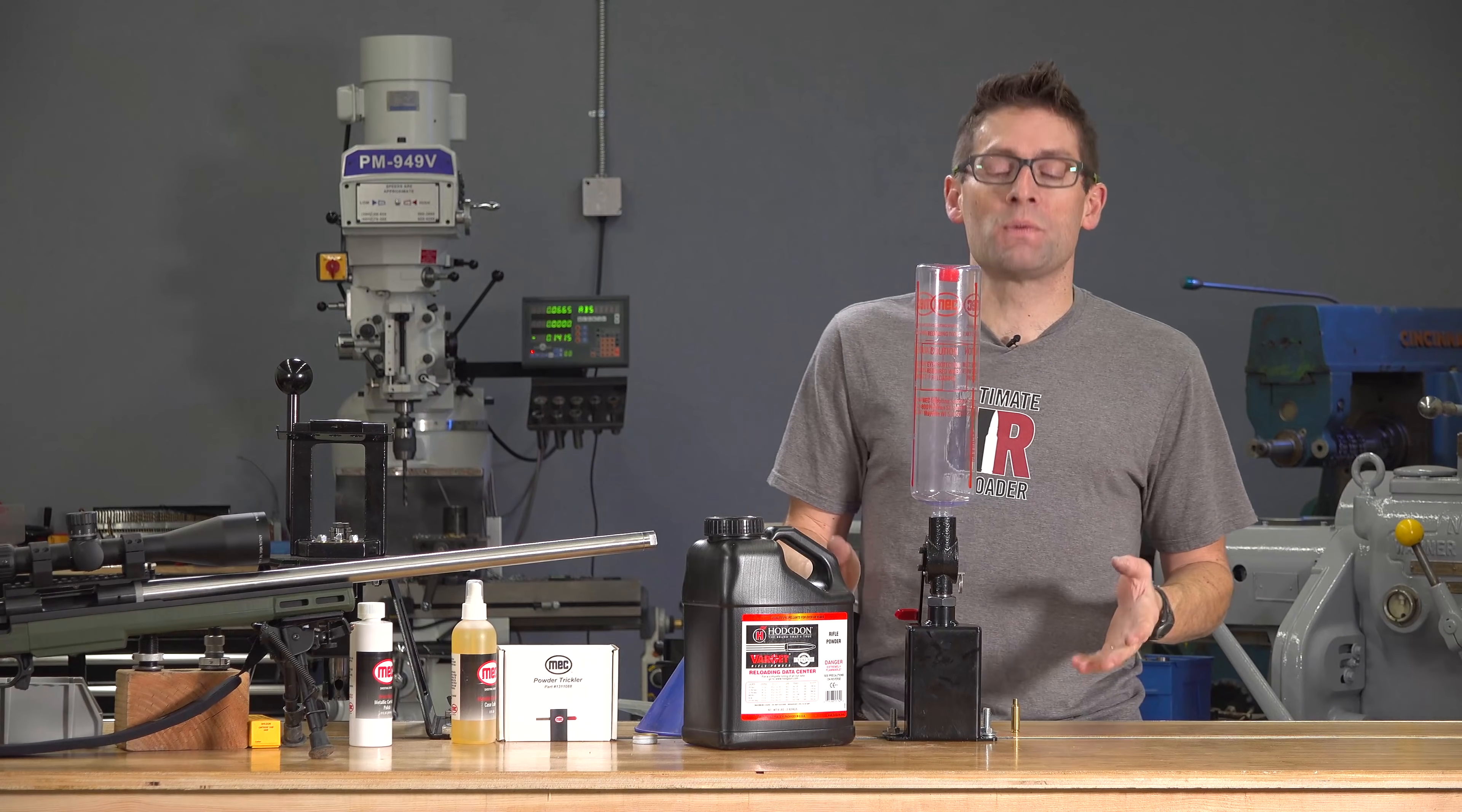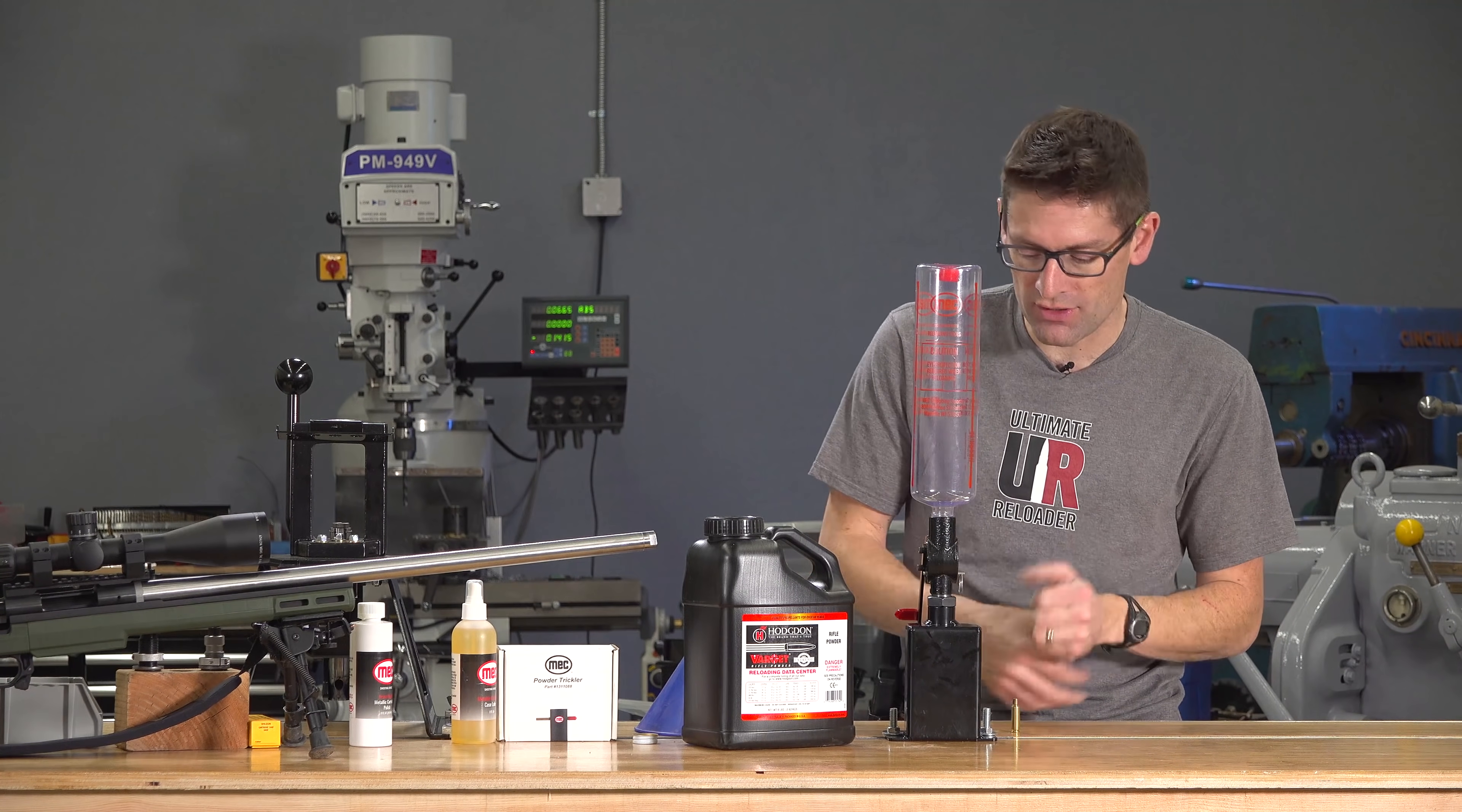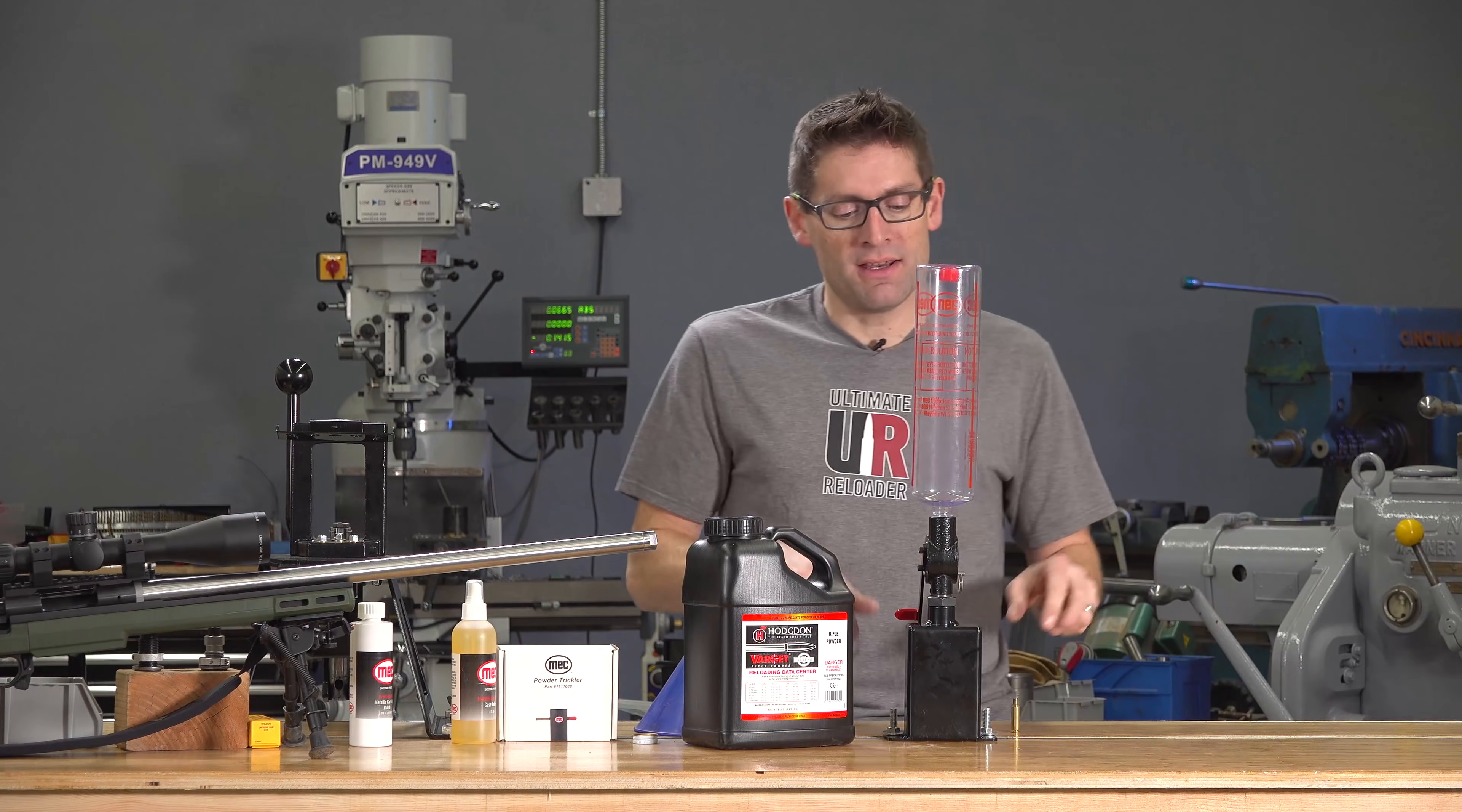So, mounting the powder measure to the bench was simple and straightforward. There's two holes in the included base. Again, love the fact that it comes with a base. They were just under three-eighths of an inch. So, I punched them out on the milling machine. Just did a little drilling to a sixty-fourth over three-eighths of an inch. And then, these bolts would freely pass through. I've got them inverted in the ultimate reloader bench system in these T-tracks. And then, I did some washers and nuts. Boom! It's super solid and I can move it kind of anywhere I need to.